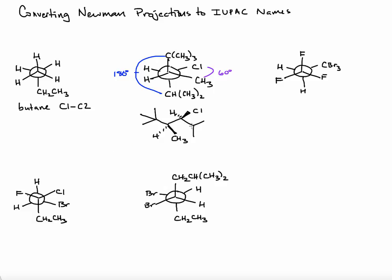Now we convert this structure into the name. The major functional group is a hydrocarbon, and we'll name chlorine as a substituent. Determining the longest carbon chain: counting one, two, three, four, five, six — we have a C6 parent, which is hexane. Looking at our numbering, at carbon two we have two methyl substituents, a methyl group at carbon three, a methyl group at carbon five, and a chlorine at carbon four. Chlorine takes precedence in alphabetical order.